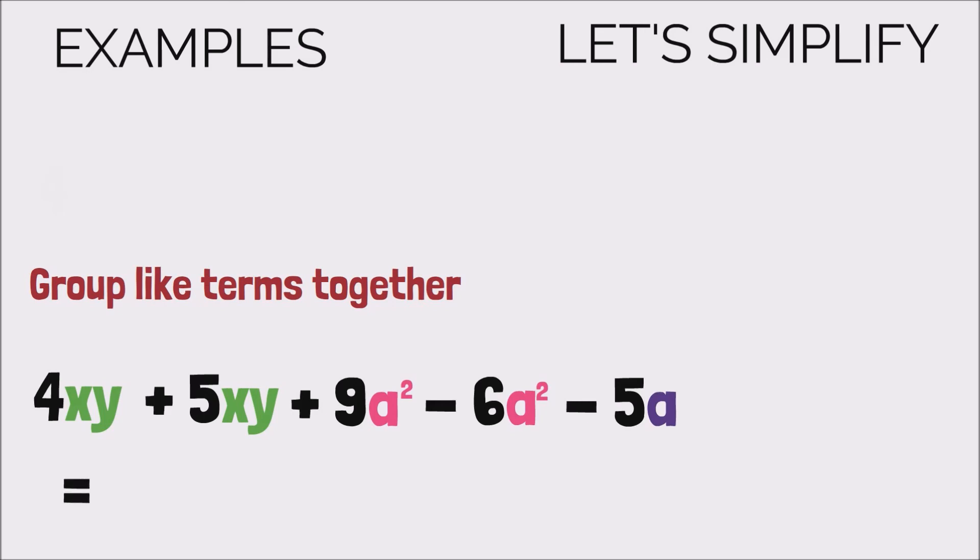So now we have just rearranged our expression so that all the like terms are directly beside each other, and then we can simplify. So 4xy plus 5xy, we're gonna add the known numbers, 4 plus 5, to give 9, write the term xy, and then continue. 9a squared minus 6a squared would be equal to subtracting 9 minus 6, so 3a squared. And finally we write the minus 5a as is, and that is our expression in its simplest form.